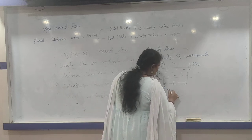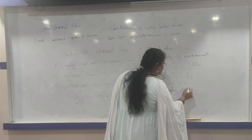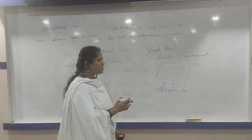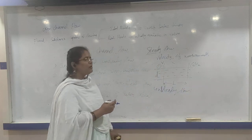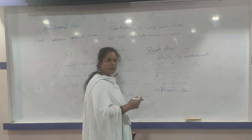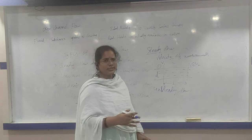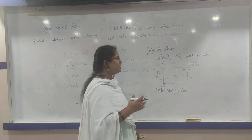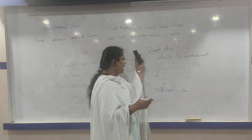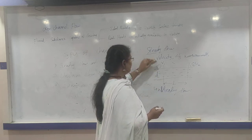What is unsteady flow? Unsteady flow means the dimensions and velocity of flow will not remain constant with respect to time. Then that flow is known as unsteady flow.